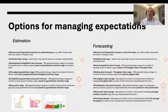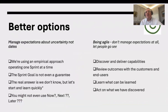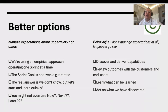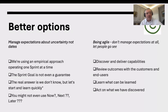Better options include managing expectations about uncertainty rather than dates. You could say you're using an empirical approach, operating one sprint at a time — the sprint goal is not even a guarantee. Or use now/next/later. Or be truly agile: don't manage expectations at all, discover and deliver capabilities, review customer outcomes, learn what can be learned, and act on what you discover. That's the most agile way — not knowing for sure what you'll do in the next sprint, but letting what you've learned influence where you go next.